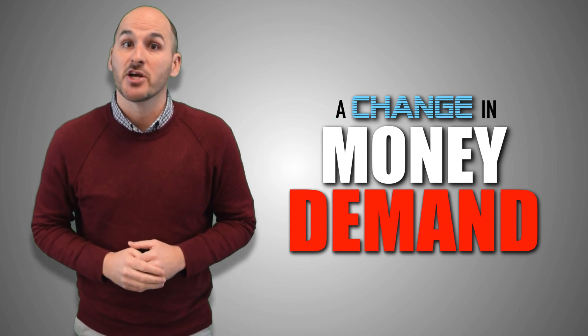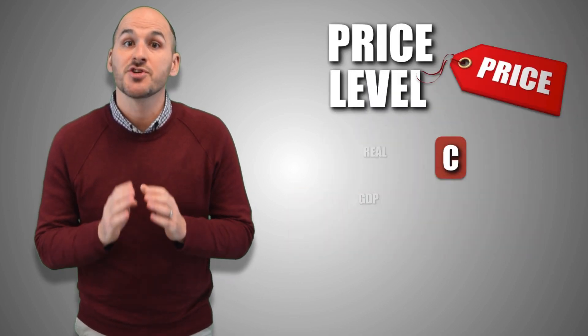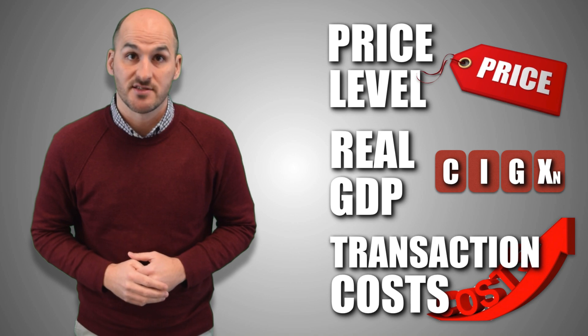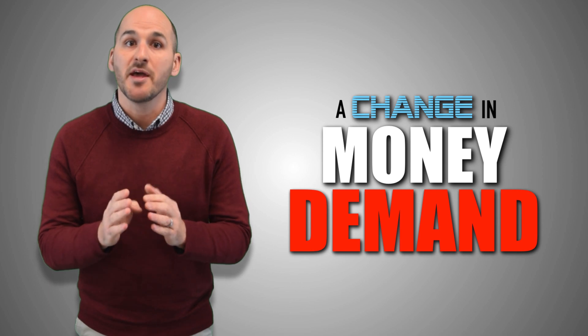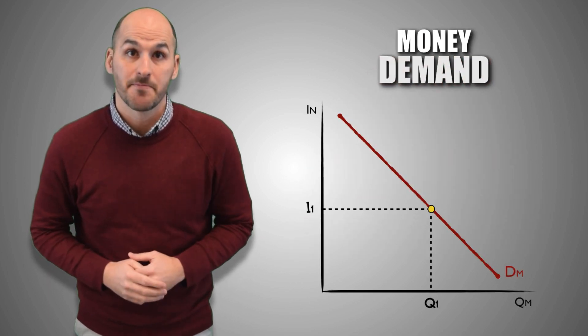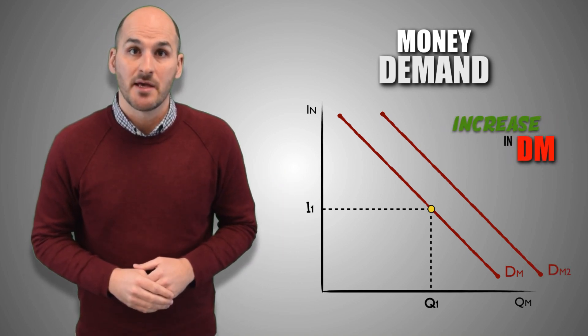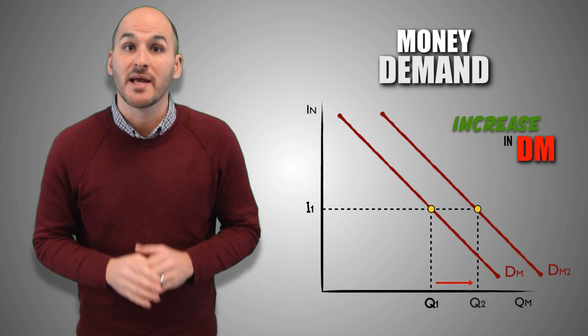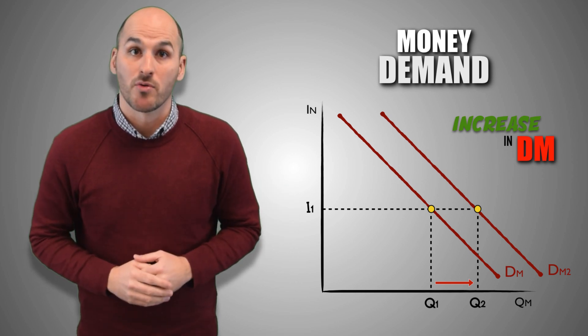Fundamental changes in economic conditions can cause consumers and borrowers to demand a lesser or greater quantity of money at every nominal interest rate. This is caused by a change in money demand, which is visualized by a shift of the money demand curve. There are three determinants to money demand: a change in price level, a change in real GDP output, and a change in transaction costs. A rightward shift of the money demand curve indicates that demand for money has increased — a greater quantity of money is being used no matter the nominal interest rate.